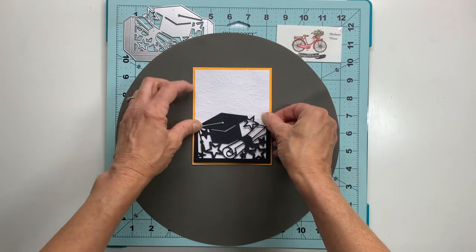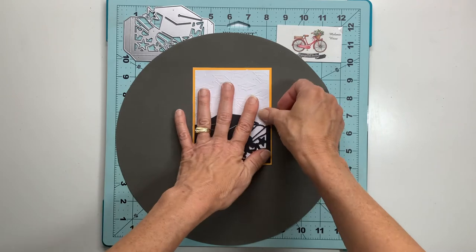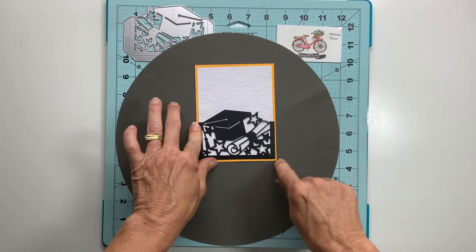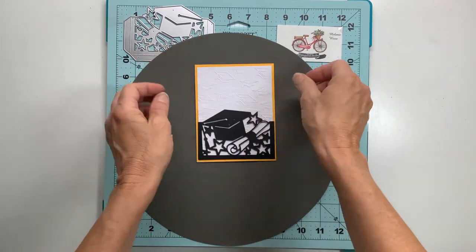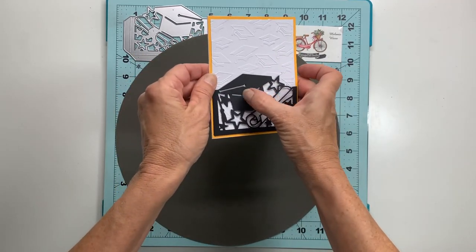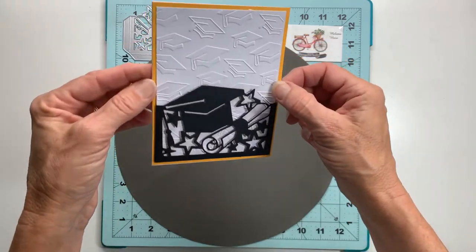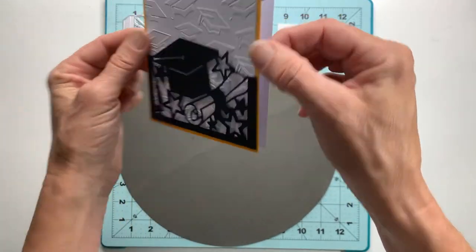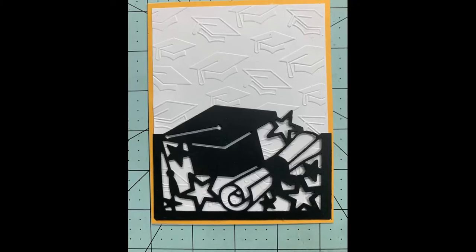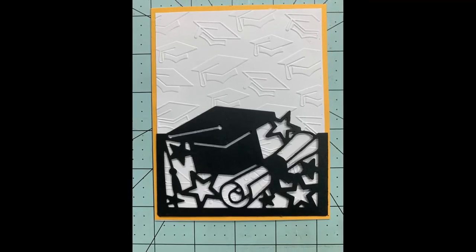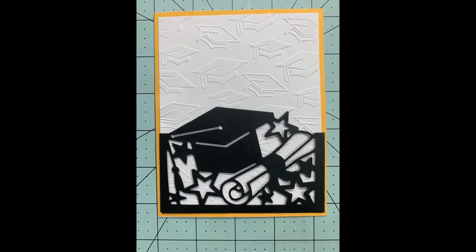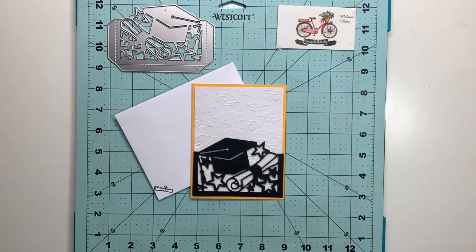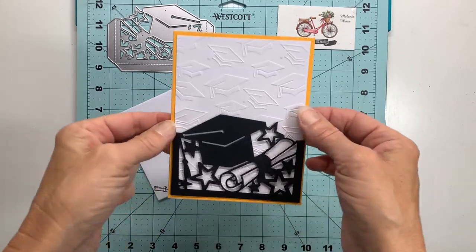I debated on whether to put a sentiment on this card or not, but I think it came out so beautifully with the embossing folder and this intricate silhouette that I just didn't want to mess with it. I'm going to stick to the simple method here and let the embossing folder and the die cut do all the talking on the front of my card. I was really happy with the way it came out. I think it looks great. The sentiment on the inside speaks for itself, and that finishes our card for today.